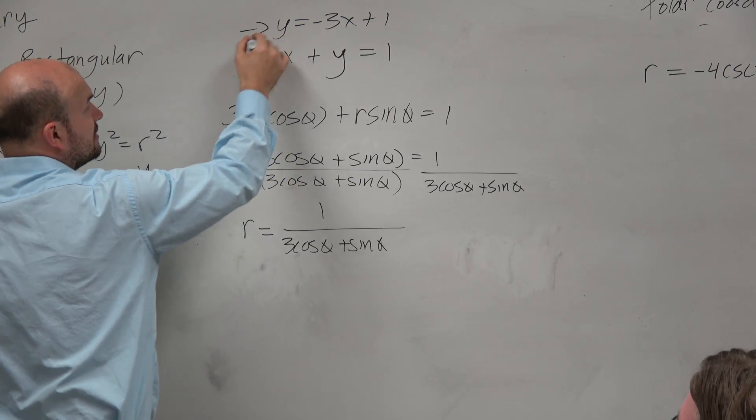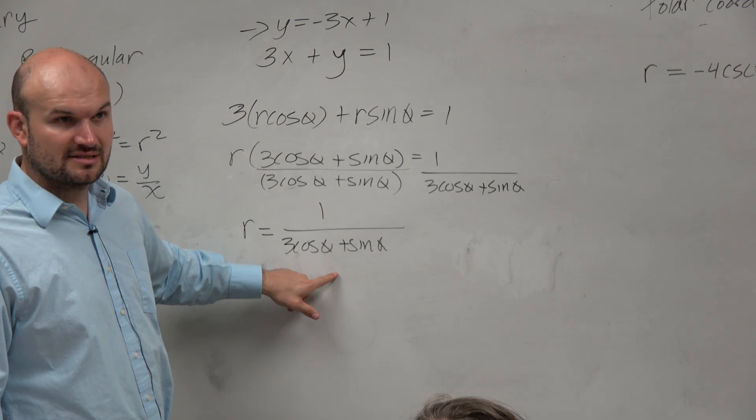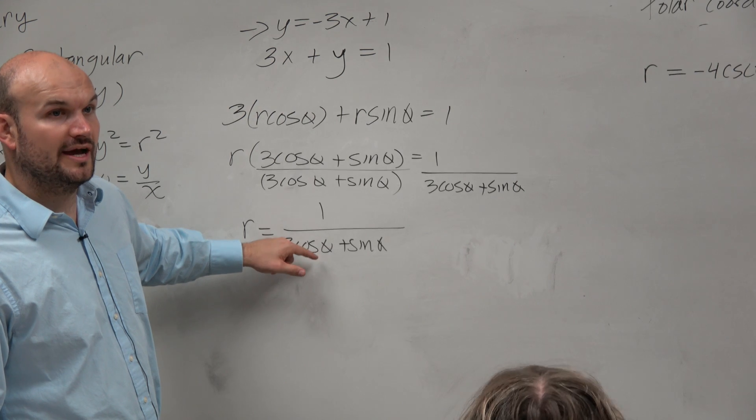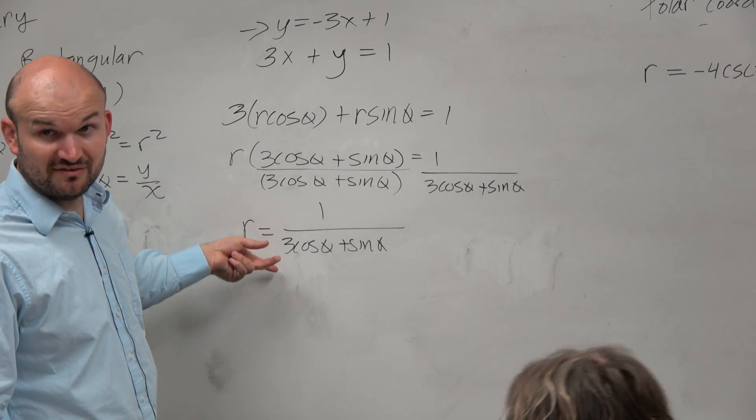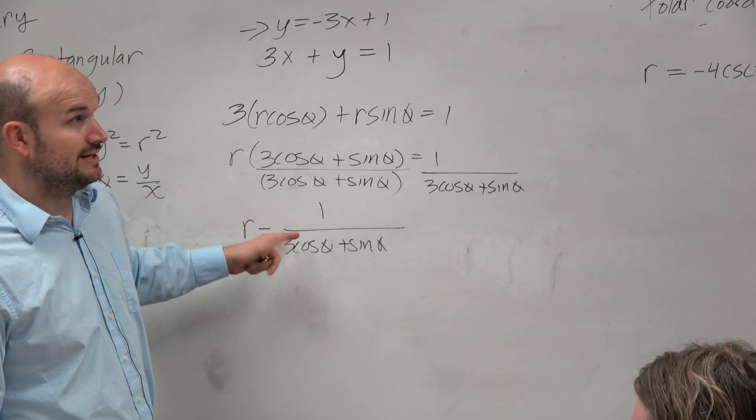That's in slope intercept form, which would be a line. This is going to produce the exact same thing. This is just in polar form. That's rectangular. That's polar form. But that's the equation of a line. I can give it to you at the beginning of the year and say, hey, what's that equation of? And you'd be like, no idea.